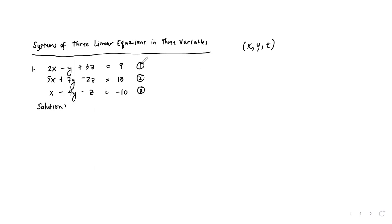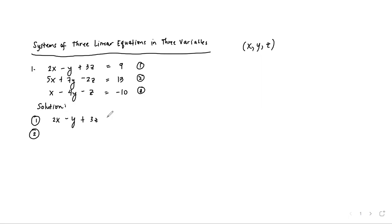For this particular example, our first equation is 2x minus y plus 3z equals 10. The second equation is 5x plus 7y minus 2z equals 13. And the third equation is x minus 4y minus z equals negative 10. We choose one pair of equations — equations 1 and 2 — and write them down: 2x minus y plus 3z equals 9, and 5x plus 7y minus 2z equals 13.